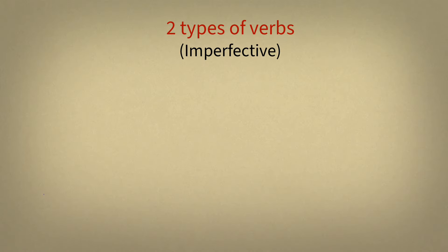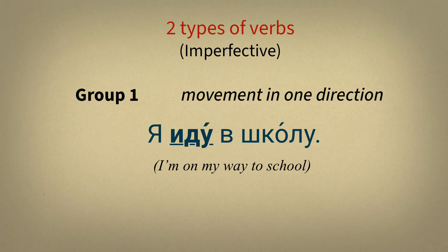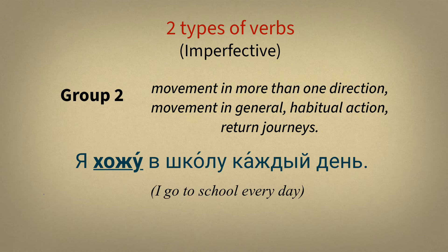Let me remind you that there are two types of verbs. They are all imperfective. The verbs of the first group denote movement in one direction. For example, Я ИДУ В ШКОЛУ. The verbs of the second group denote movement in more than one direction — movement in general, habitual action, return journeys. For example, Я ХОЖУ В ШКОЛУ КАЖДЫЙ ДЕНЬ.